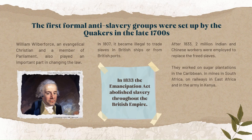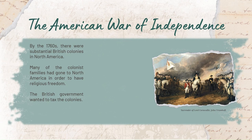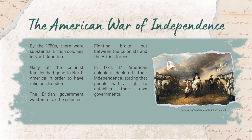The American War of Independence. By the 1760s, there were substantial British colonies in North America. The colonies were wealthy and largely in control of their own affairs. Many of the colonist families had originally gone to North America in order to have religious freedom. They were well educated and interested in ideas of liberty. The British government wanted to tax the colonies. The colonists saw this as an attack on their freedom and said there should be no taxation without representation in the British Parliament. Parliament tried to compromise by repealing some of the taxes, but relationships continued to worsen. Fighting broke out between the colonists and British forces. In 1776, 13 American colonies declared their independence, stating that people had a right to establish their own governments. The colonists eventually defeated the British army and Britain recognised the colonies' independence in 1783.